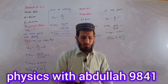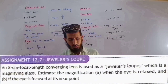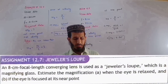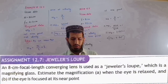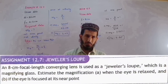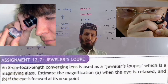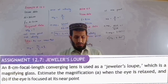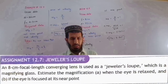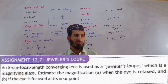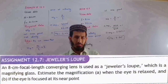Now for assignment 12.7: an 8 centimeter focal length converging lens is used as a jeweler's loupe, which is a magnifying glass. We estimate the magnification. Magnification is considered when the eye is relaxed — that is, the eye is relaxed at infinity.